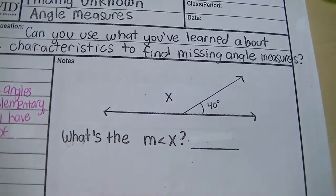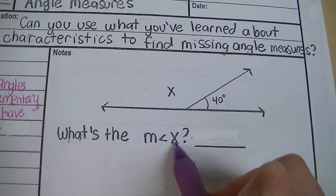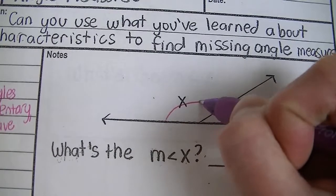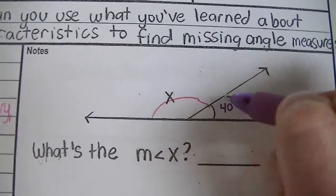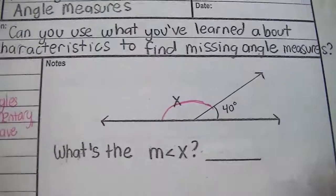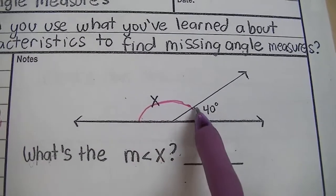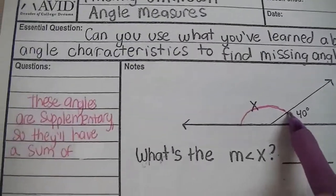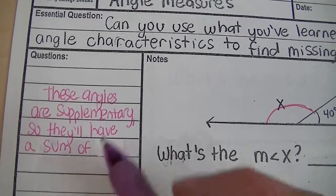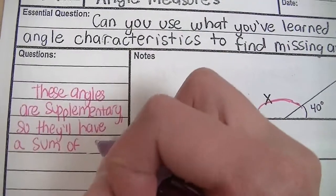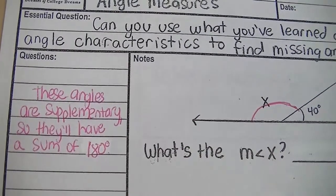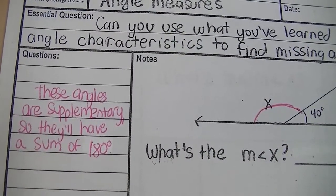The first question asks: what's the measurement of angle X? We're trying to find the degree measurement of this angle — this opening right here. Angle X and this 40-degree angle have a supplementary relationship, so they're going to have a sum of 180 degrees. These angles are supplementary, so they'll have a sum of 180 degrees.